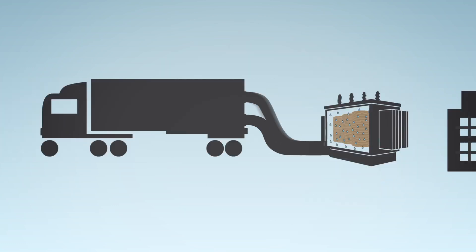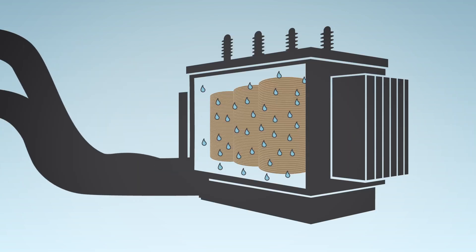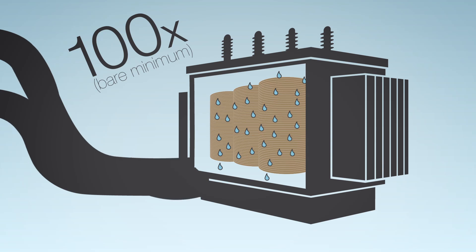So if testing shows high moisture levels in your transformer oil, you could bring in a rig and process the oil to remove the moisture. The problem with that is that the paper in your transformer holds at least 100 times more moisture than the oil itself.